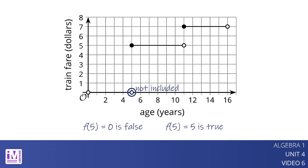f of 5 equals 5 is true. The point 5 comma 5 has a solid circle to indicate that it is included in the middle segment. The ride costs $5 when the child is exactly 5 years old.